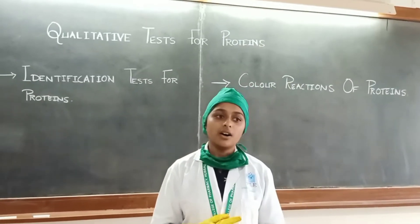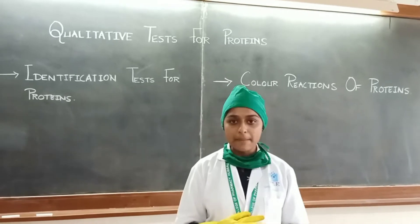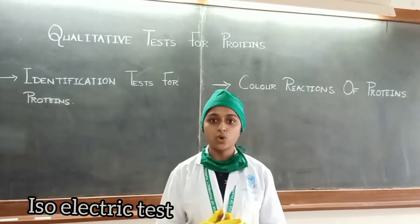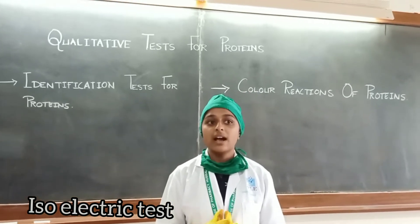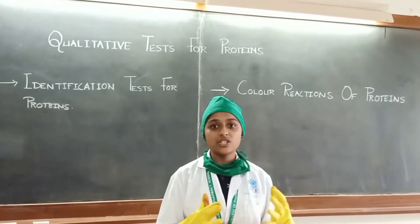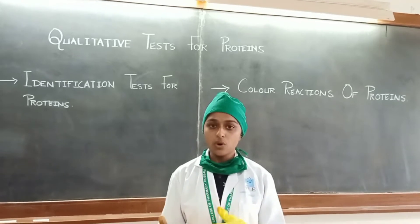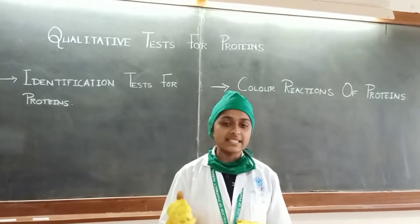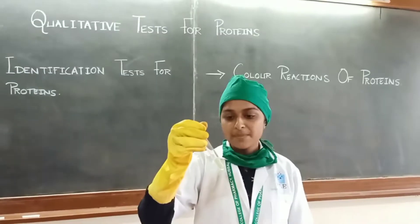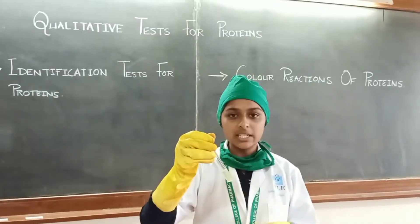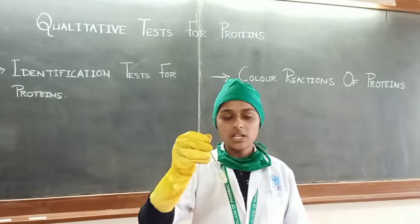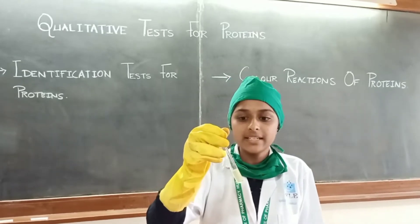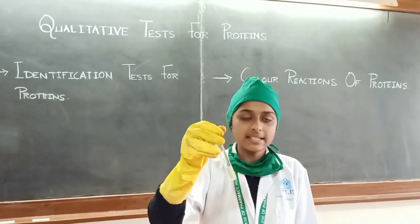Isolate precipitation test: 5 ml of sample plus 3 drops of bromocresol — the color changes from green to blue. Add warm concentrated acetic acid drop wise. By observing it, no curdy precipitate is observed, indicating that casein is absent.